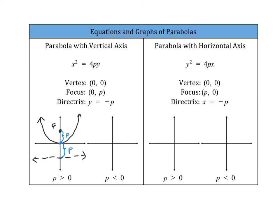If your p-value is negative, we have a downward-facing graph. The focus is going to be below the vertex, and the directrix will still be a horizontal line but above your graph. The distance from the vertex to the focus is p, and the distance from the vertex to the directrix is also p. The focus is always inside the parabola, and the directrix is always outside and should never intersect your parabola.